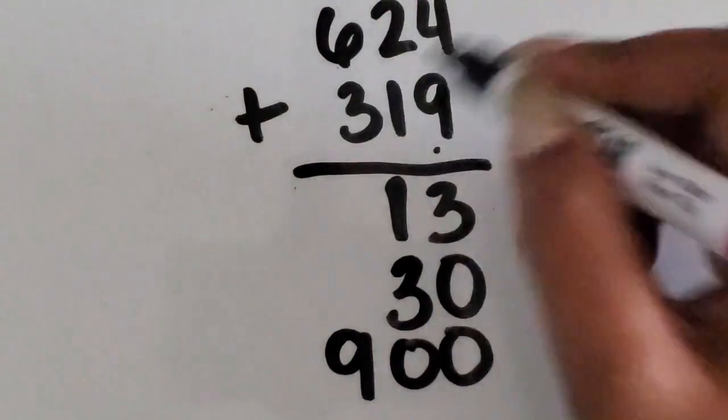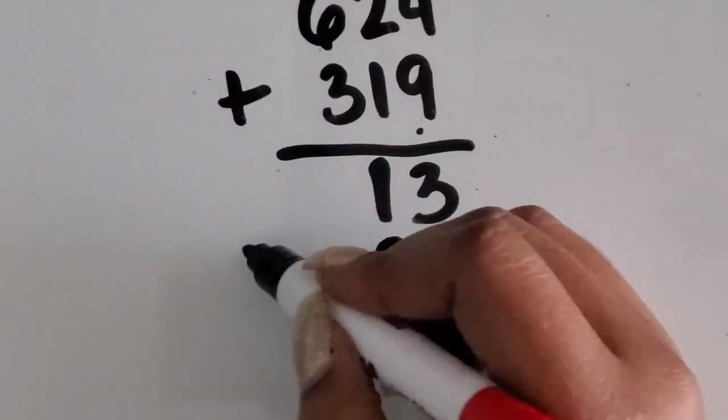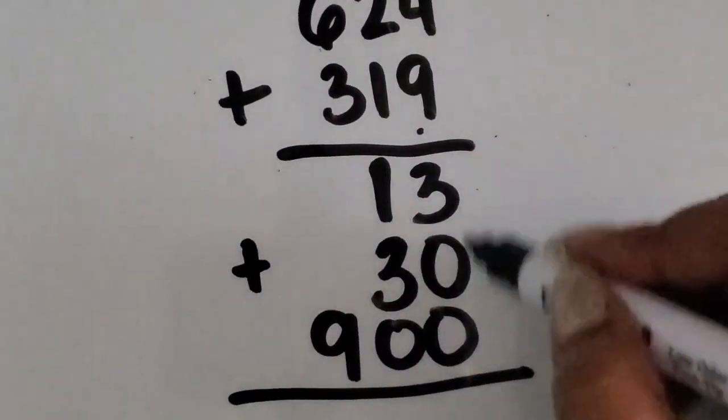So again, what we're doing is writing out the sum of each of the places. And now we're just going to add those all together.